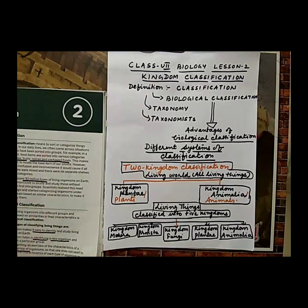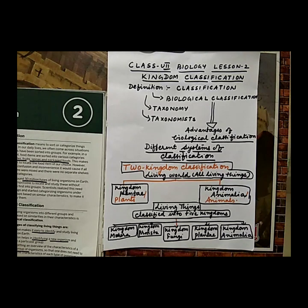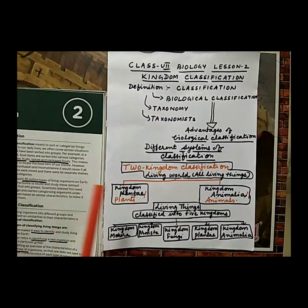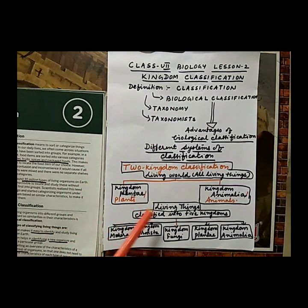Taxonomy is a branch of biology which deals with systematically classifying living things based on similarities in their structure and origin. The person who studies the structure, origin, and similarities of organisms is known as a taxonomist. Taxonomy and taxonomist are both useful concepts when we study classification.